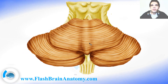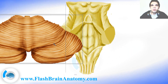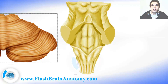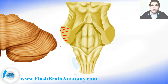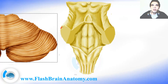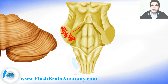Now if we simply cut the cerebellum off, this is what we would be able to see. We have cut the fibers that go in and leave the cerebellum, and they go through these structures called peduncles: the middle peduncle, the inferior peduncle, and the superior one — and the same on the other side.